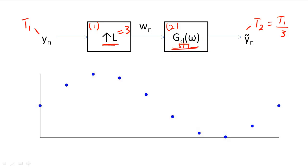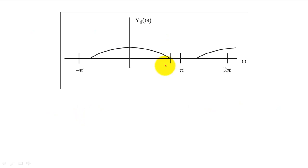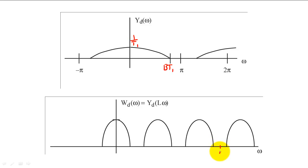When we upsample a signal, we simply add L minus 1 zero samples in between the samples of Y of N. If we add these zero samples into Y, we squish the frequency axis of the DTFT of Y by a factor of L.